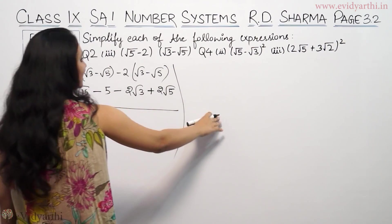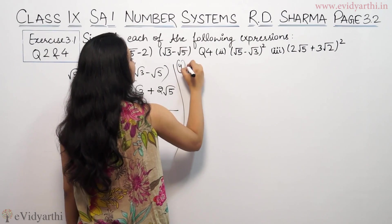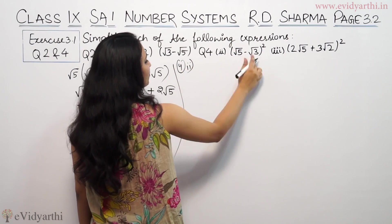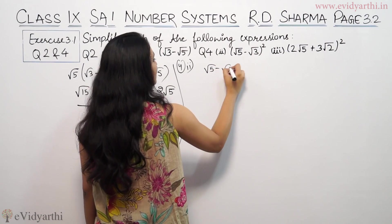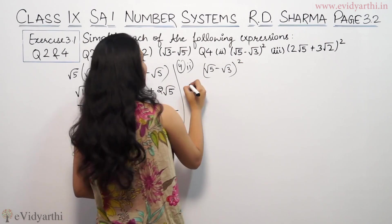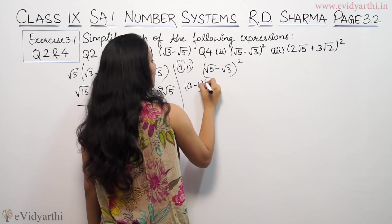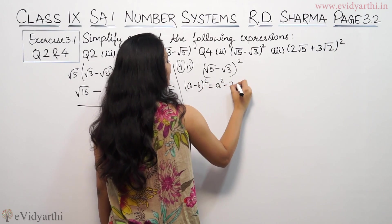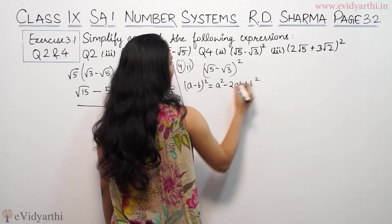Similarly, next question, question 4, which is (√5 - √3)². It means (a - b)². So (a - b)² has the formula a² - 2ab + b².